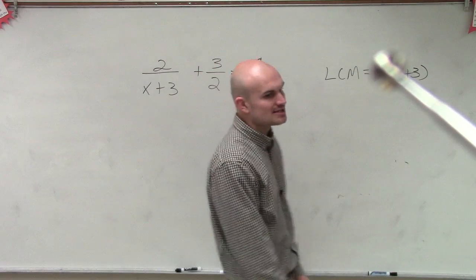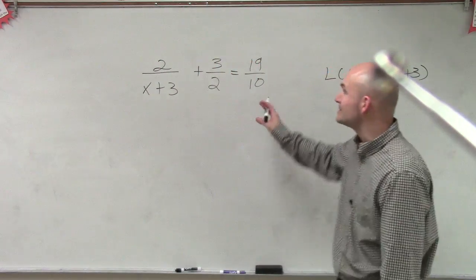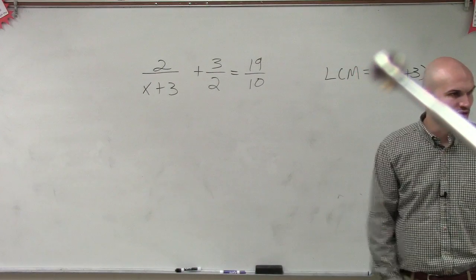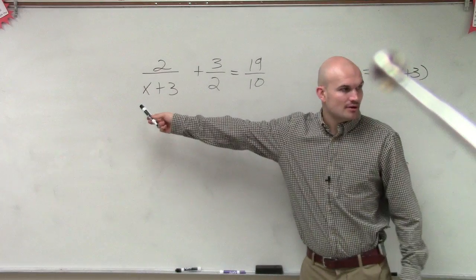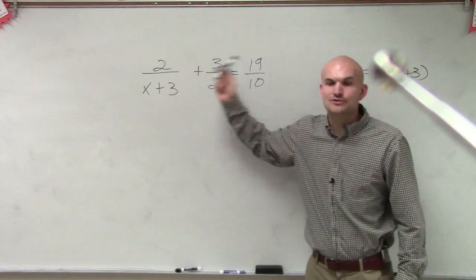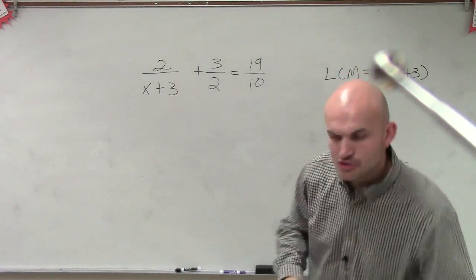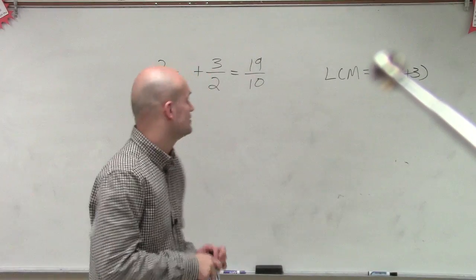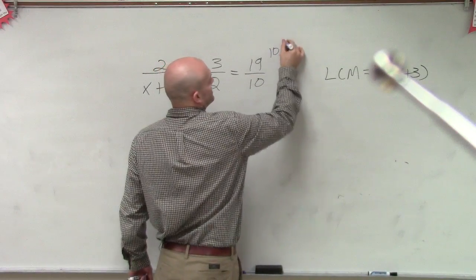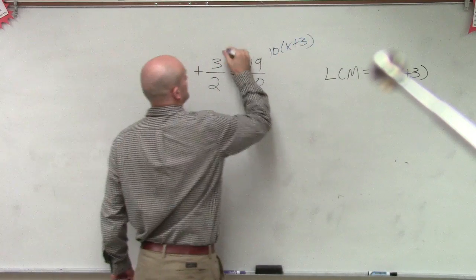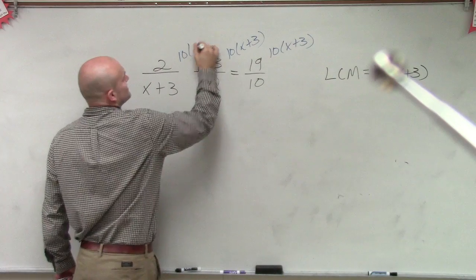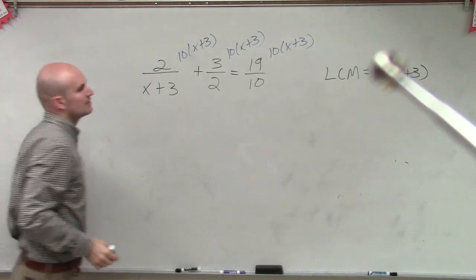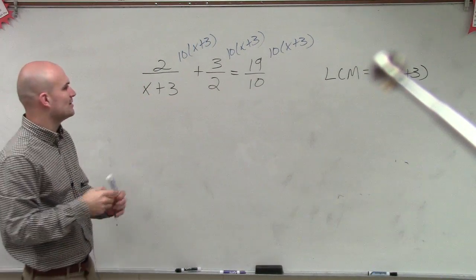So now what we're going to do in this case, ladies and gentlemen, is we're going to multiply every single term by the least common multiple. We can't just multiply the last term and then this term. We have to multiply every single term by our least common multiple to produce equivalent equations. So let's see what happens. 10 times x plus 3. 10 times x plus 3. And 10 times x plus 3. So now let's go, what happens when we multiply each one of these?